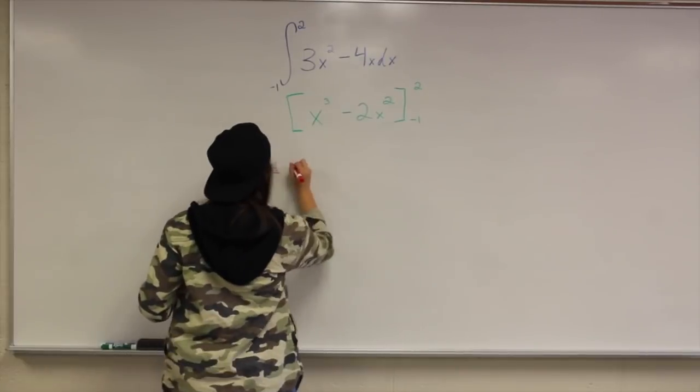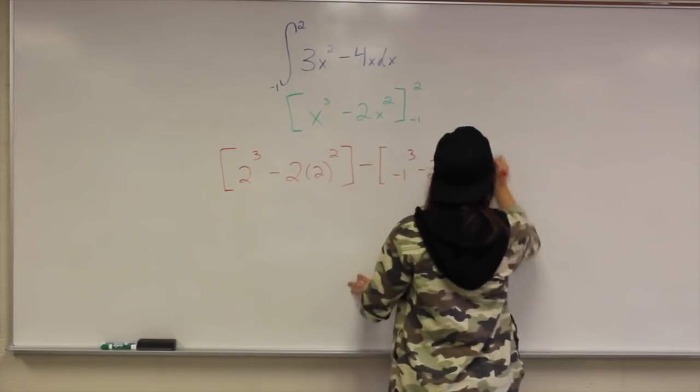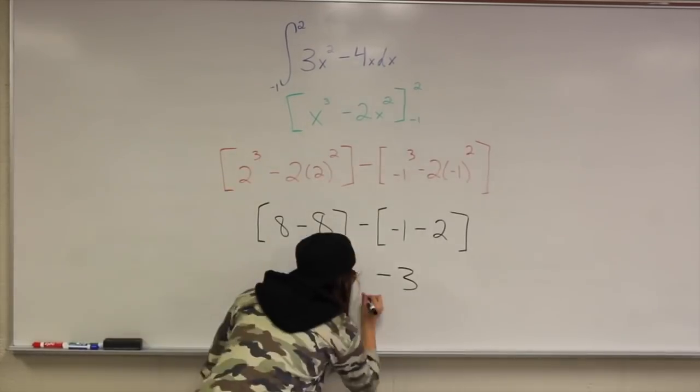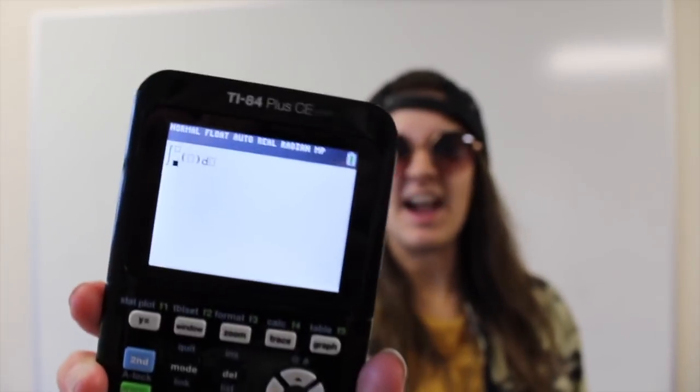take the antiderivative. Moving on, take your b minus a. Keep on solving and find the area of space. And when you're done, make sure you're doing fine. Just pick up a calculator, press math 9.